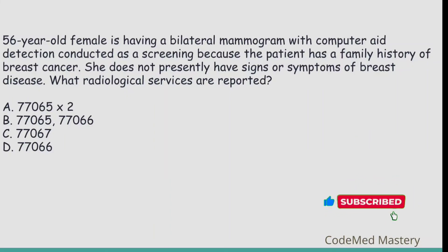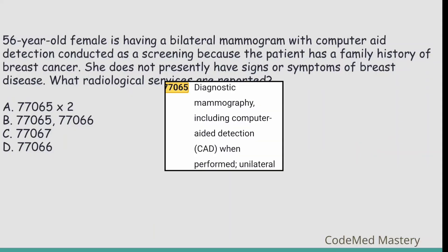Next question: A 56-year-old female is having a bilateral mammogram with computer-aided detection conducted as a screening because the patient has a family history of breast cancer. She does not presently have signs or symptoms of breast disease. What radiological services are reported? Option A: 77065 — diagnostic mammography including computer-aided detection when performed, unilateral.